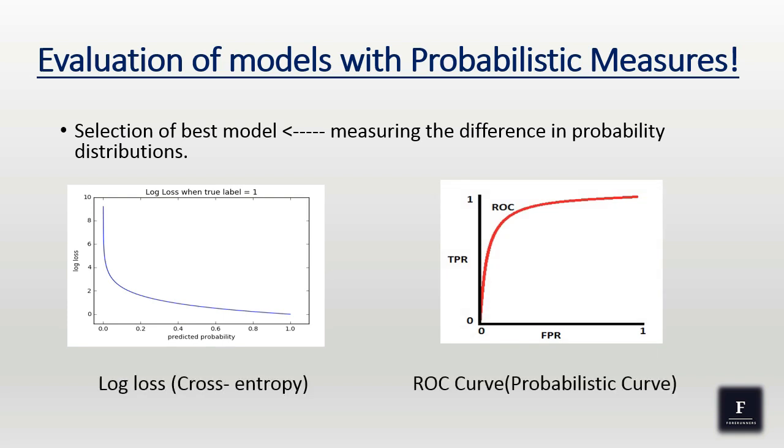As you can see, the predicted probability for class 1 reaches 1, the log loss value also approaches 0. The ROC curve is known as the receiver operating curve. It is a probabilistic curve which measures the ratio of true positive to false positive.